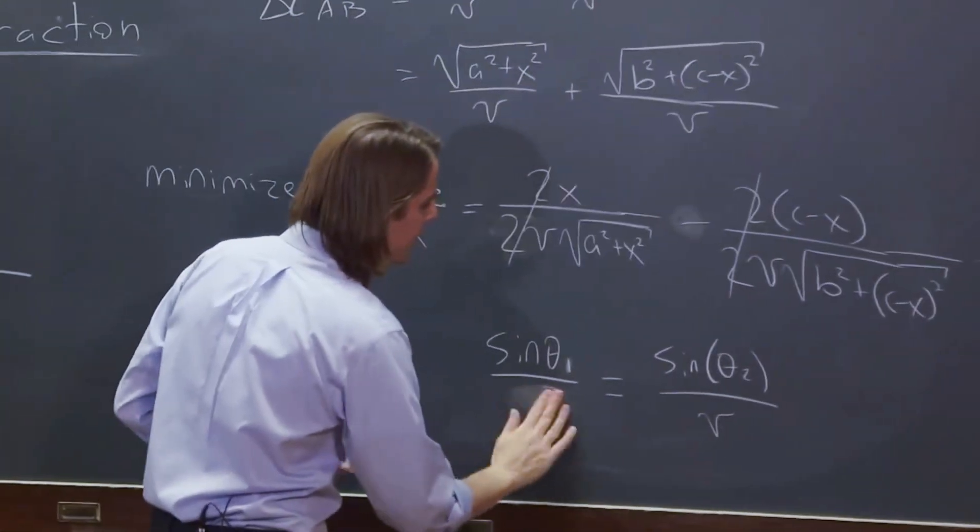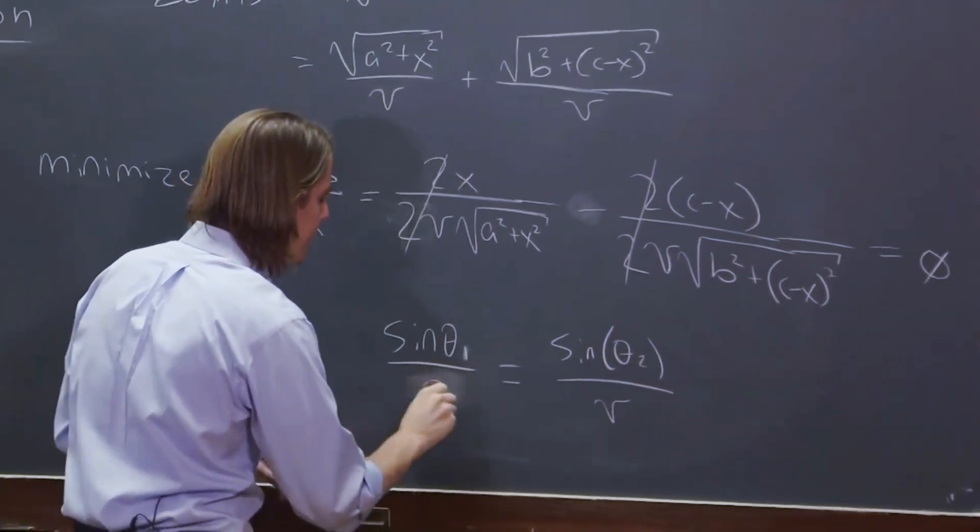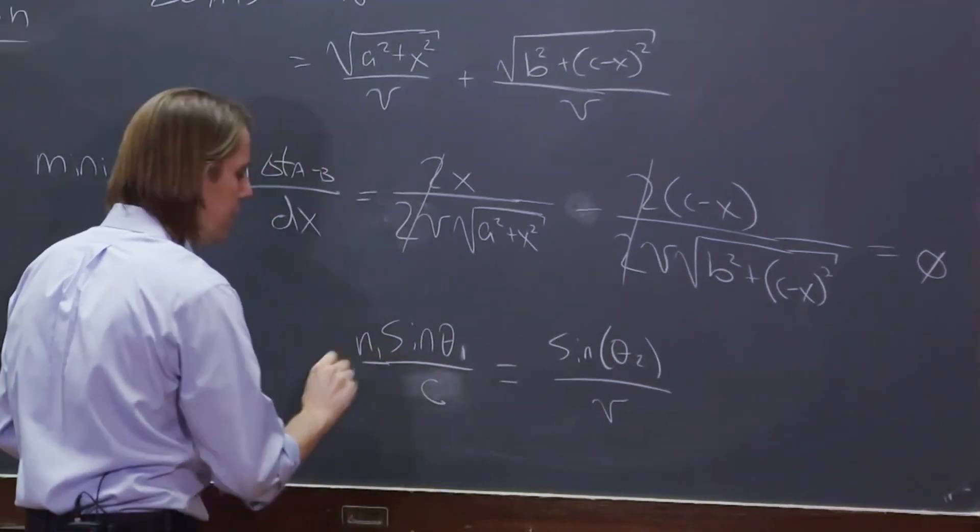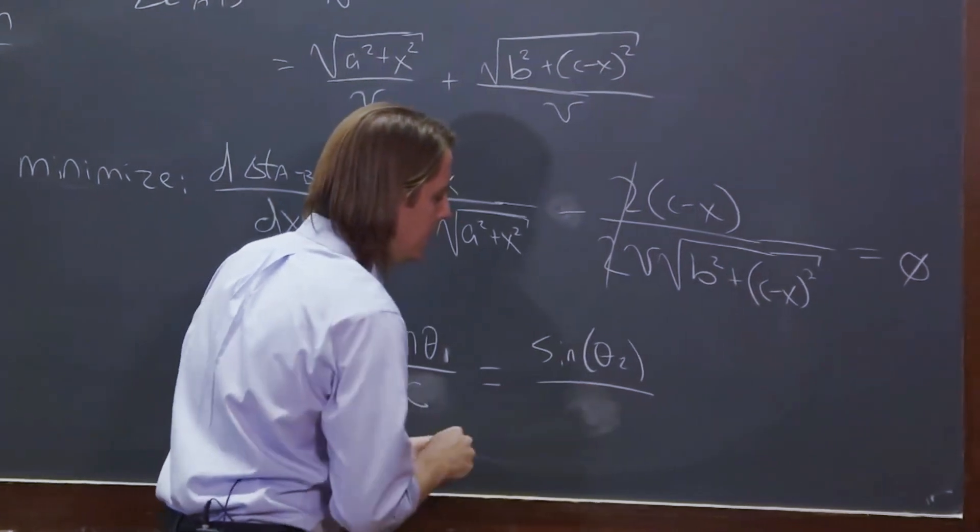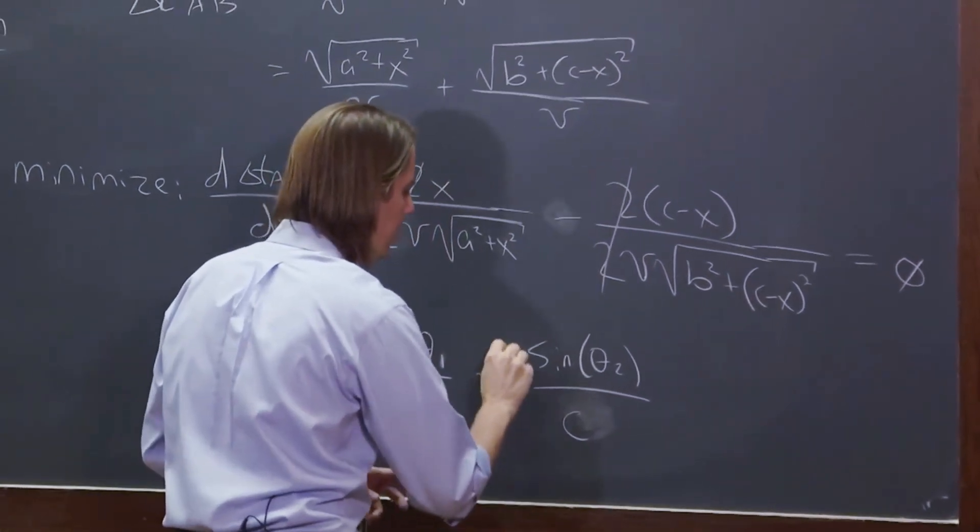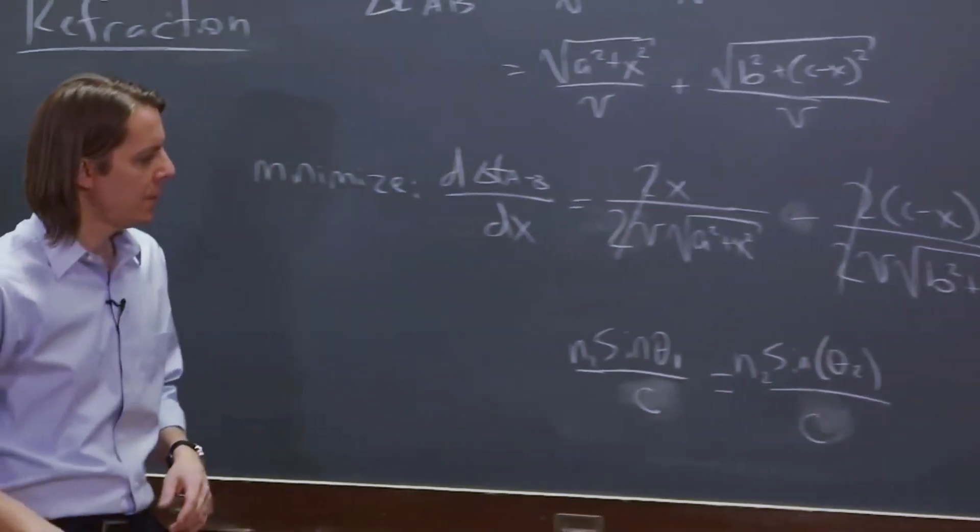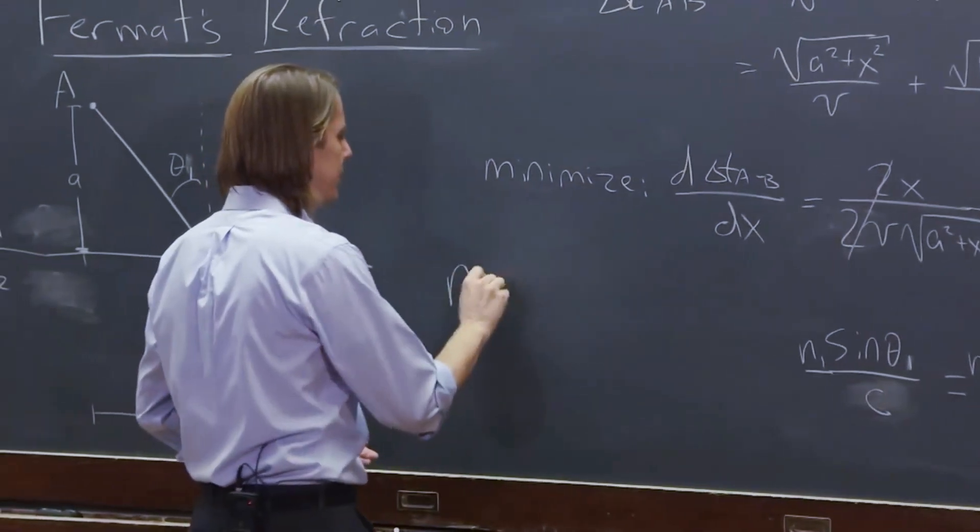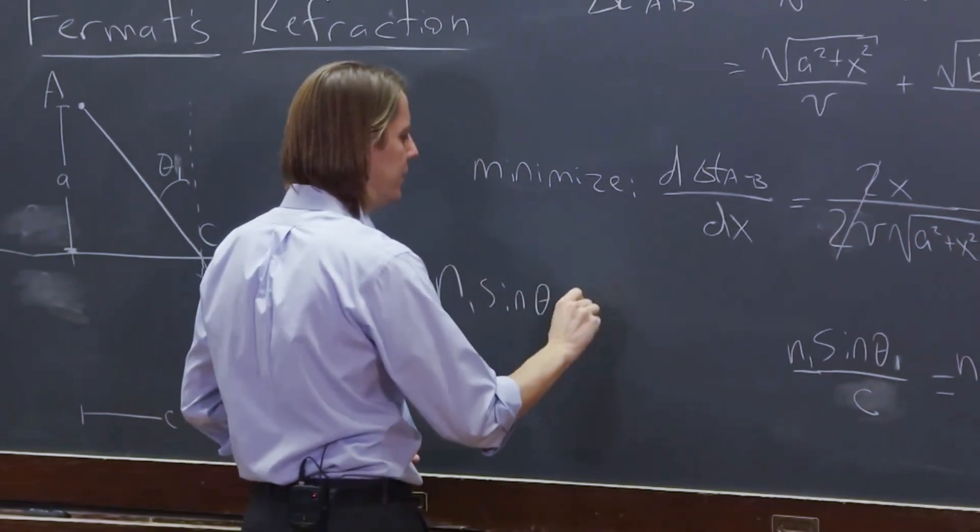So instead of writing it as V's, it's C over N1. And this one is C over N2. So you can see, you get rid of the C's, and you get Snell's Law.